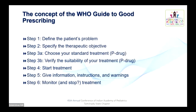WHO has come up with six steps of good prescription. Step one: define the patient's problem. Step two: specify the therapeutic objective. Step three A: choose your standard treatment protocol, and step three B: verify the suitability of your treatment to the patient. Step four: start the treatment. Step five: give information, instruction, and warning signs to the parents. Step six is monitoring of the treatment, and you have to stop the treatment if there are any potential adverse effects.